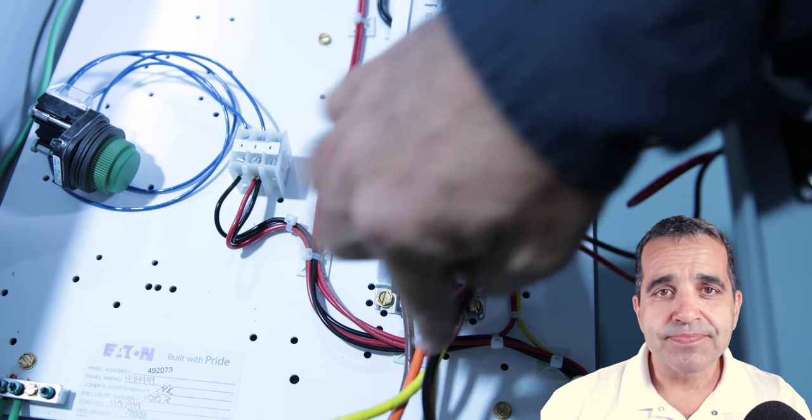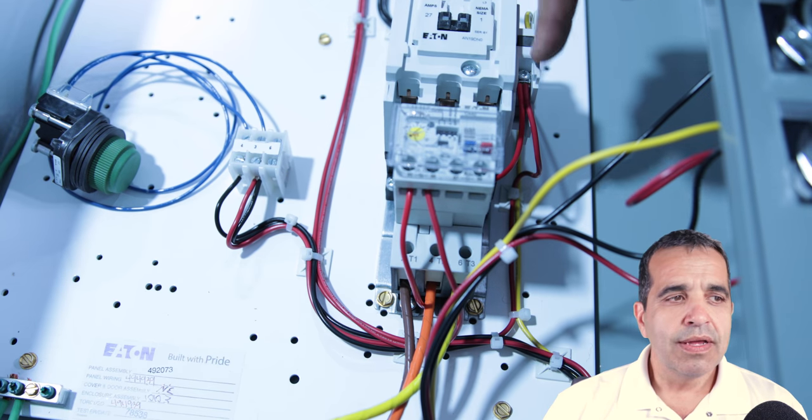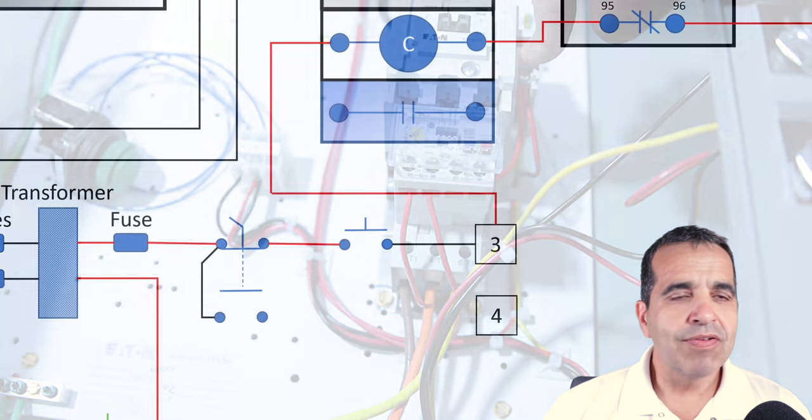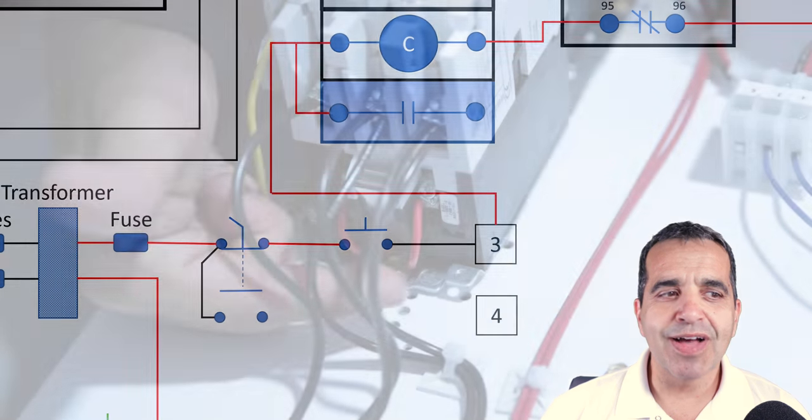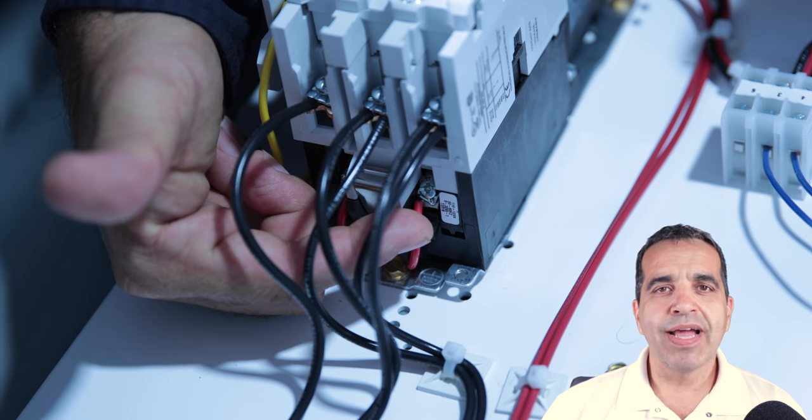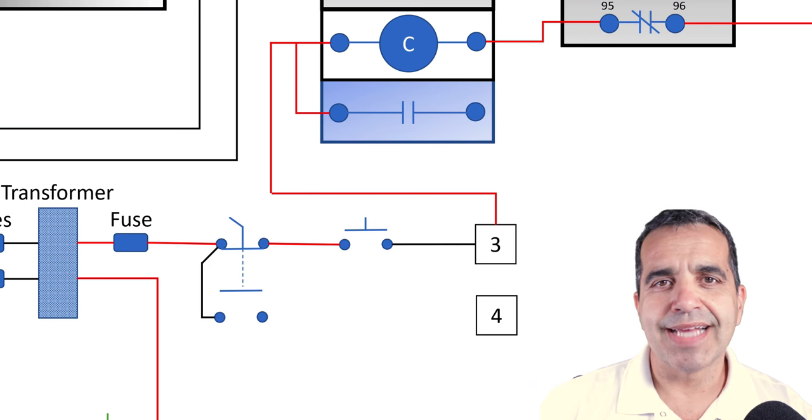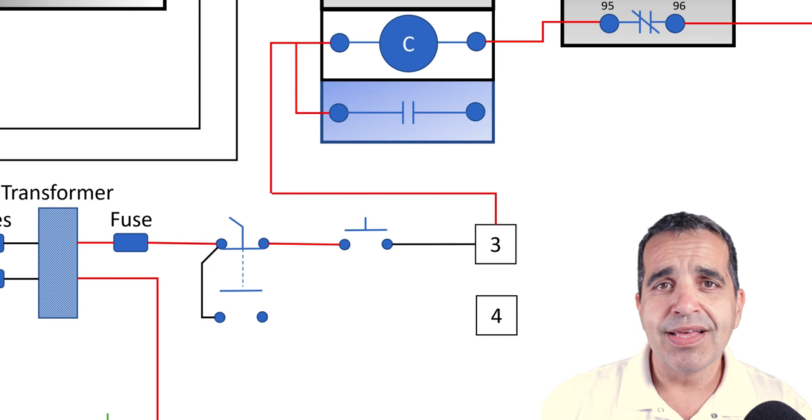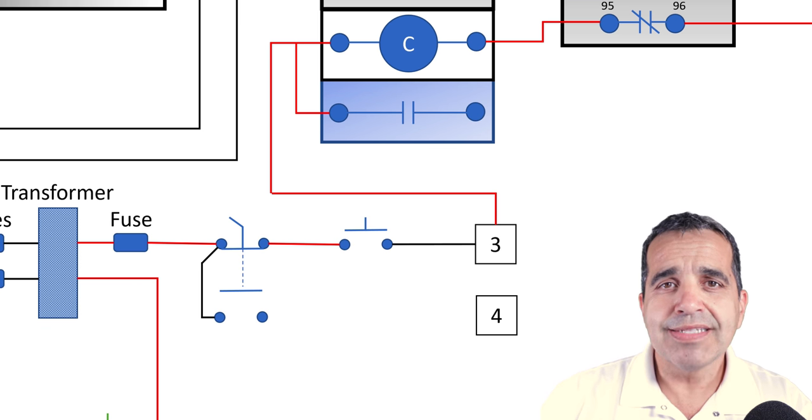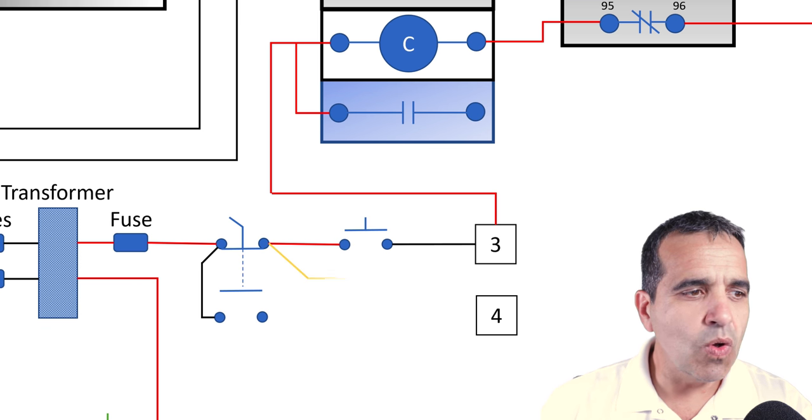We have a little jumper from our coil over to one side of our normally open contactor. Then we need a holding contact so that after we push the start button, our coil and our contact can remain closed.